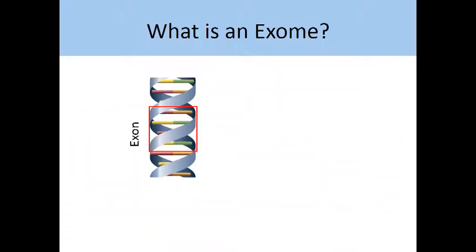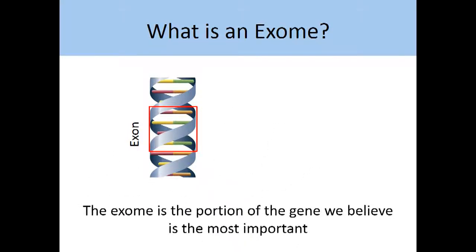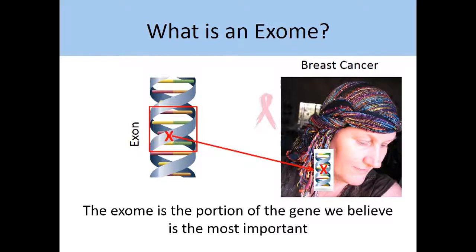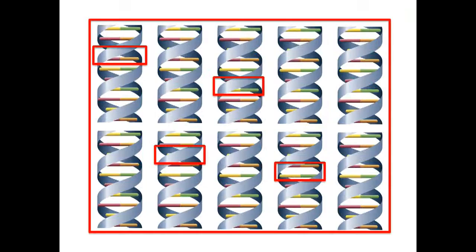An exon is the specific portion of the gene that we believe is most important for telling our body how to function and how to build working parts. This is where we believe most genetic mutations occur. The exome is the exons of all 20,000 of our genes. So instead of looking at all of your DNA, we can look at only the regions where we think most mutations occur.